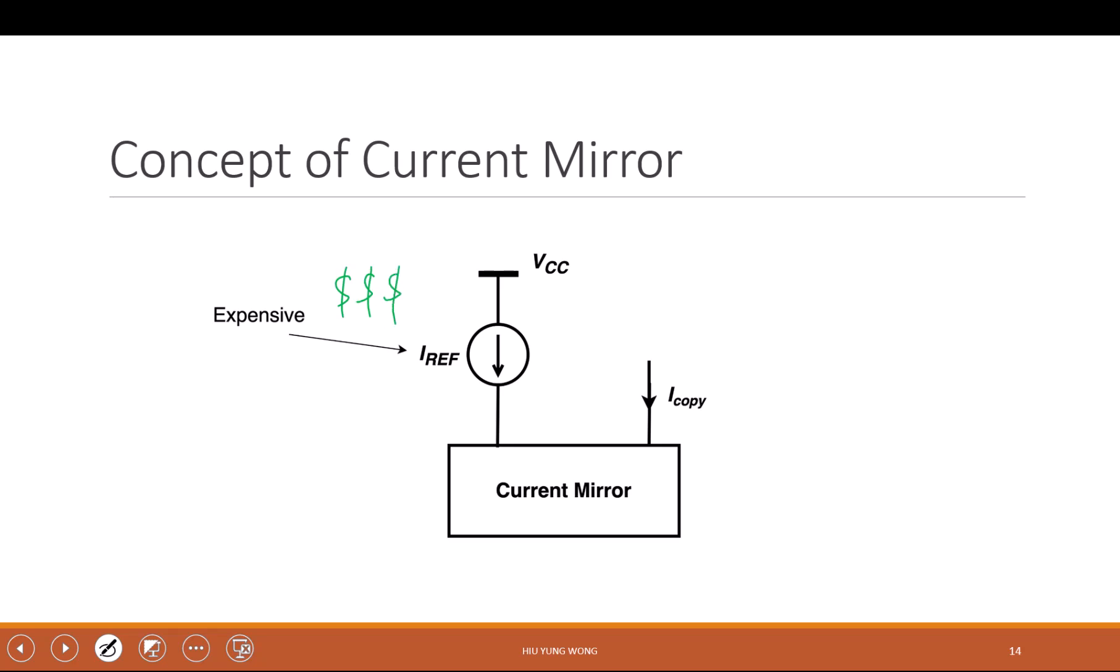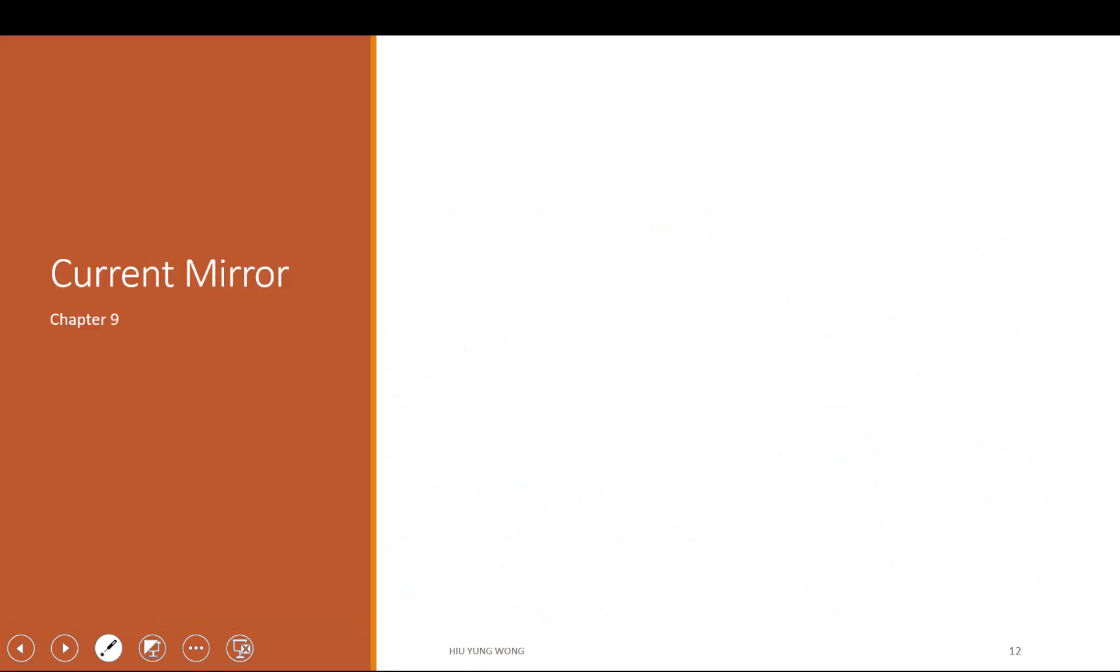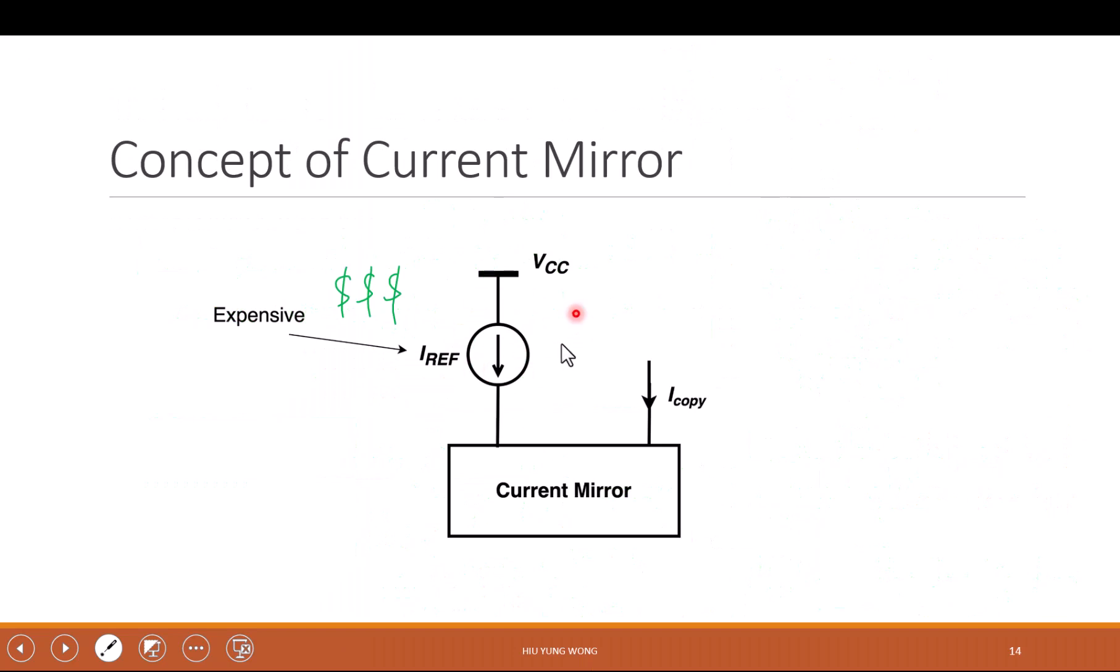Spend a lot of engineering time, a lot of area. I assume you are able to do this current source. The only current source we have done, the best current source we have done so far is only just this. This is the best we will do in this class. Assume we do get a good current source here. We want to study can we copy this current source to somewhere. Of course this copy action needs to be simple and also insensitive to variation, otherwise it's meaningless.